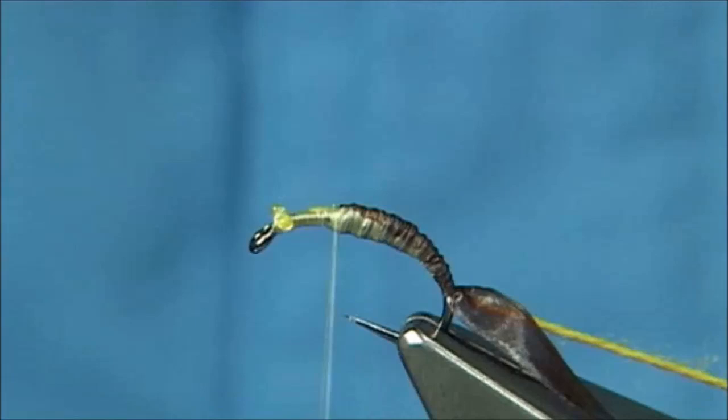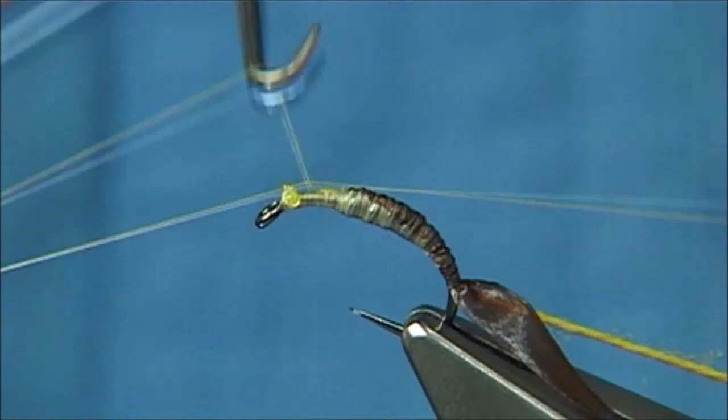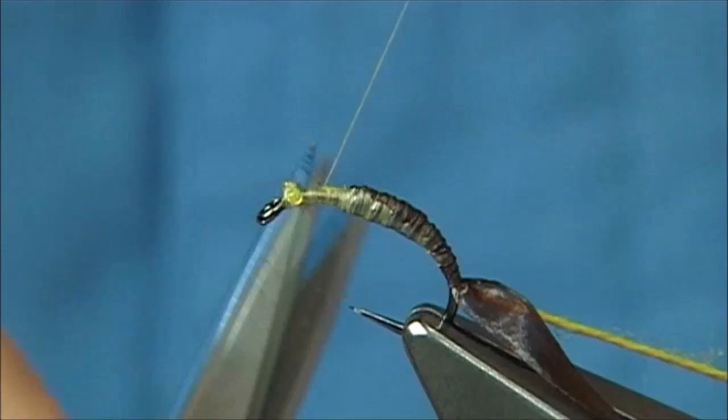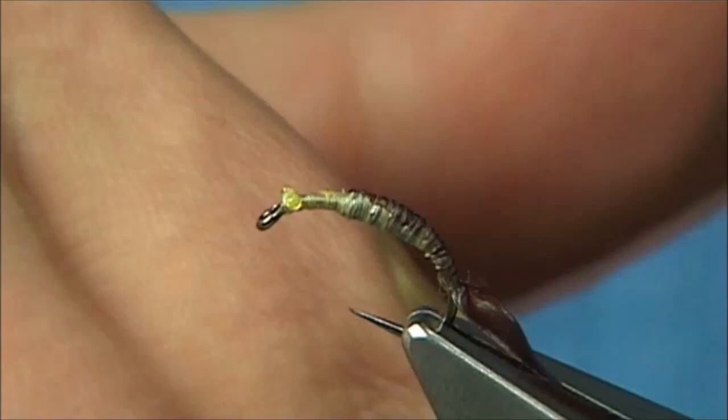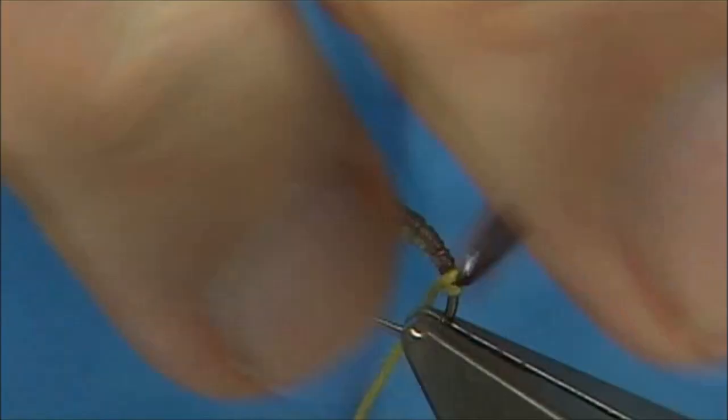And then I'm going to remove the thread. I'm going to put it back on once I've formed the body. So just do a whip finish and take the thread off. Then we're left with the yarn. The yarn is going to tie in and form the body. First turn I usually do is underneath the scud back, then I do a turn in front.